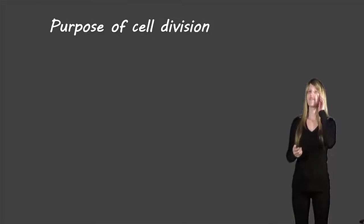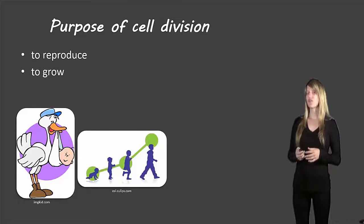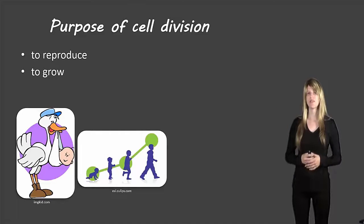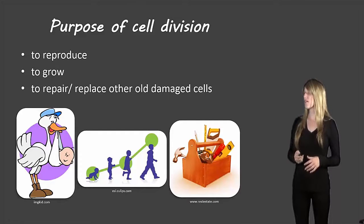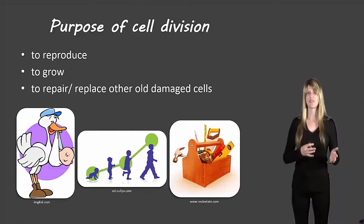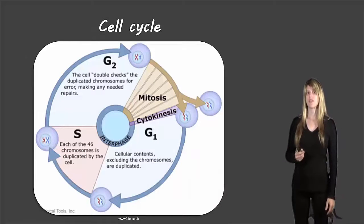First of all, the purpose of cell division. In order to reproduce, cells need to divide. In order to grow — for a multicellular organism — it needs to go through the cell cycle. And to repair or replace old and damaged cells, you need to create more cells in order to take the place of those old or damaged cells.